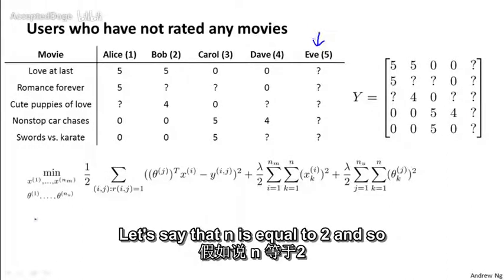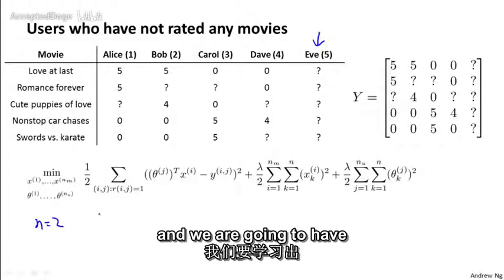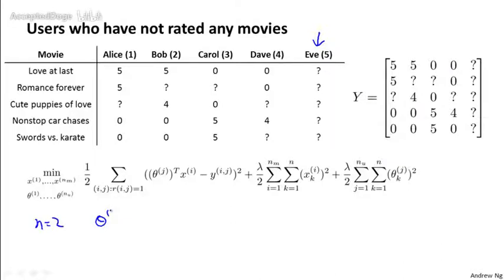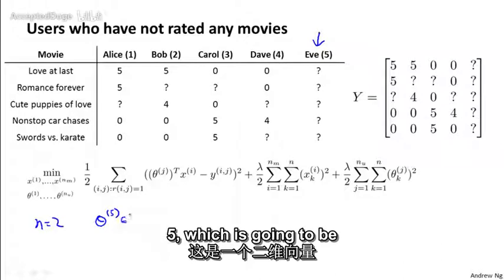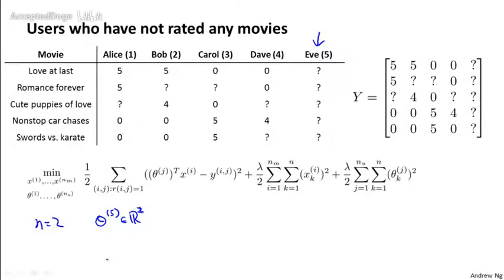Let's say that n is equal to 2, and so we're going to learn two features, and we're going to have to learn a parameter vector theta 5, which is going to be in R2. Remember, this is now vectors in Rn, not Rn plus 1. We're going to learn the parameter vector theta 5 for our user number 5, Eve.